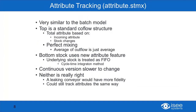There's a variant of that which allows me to introduce the new concept of adding an attribute to a flow — it's going to be called attribute.stmx, but it's very similar to the batch model. The top will be a completely standard co-flow structure — if you watched the molecules webinar a month or so ago you will have seen co-flows introduced there. It's a very standard structure where we keep track of attributes based on incoming attributes and the way the stock changes, and that again assumes perfect mixing.